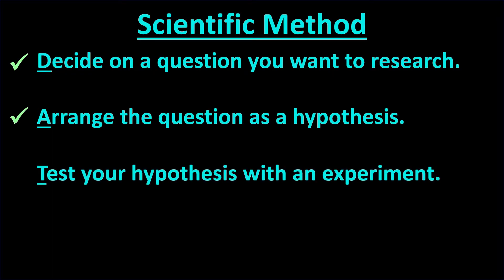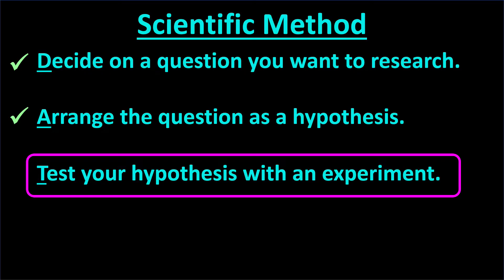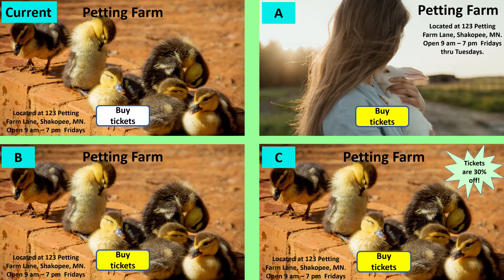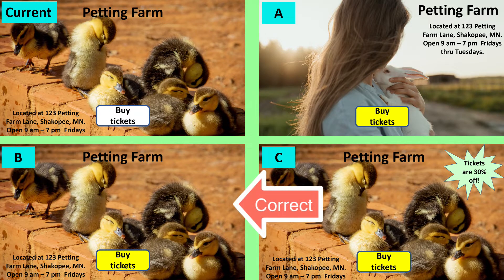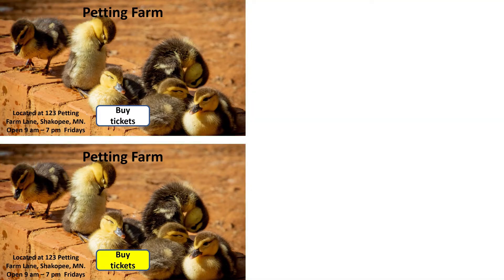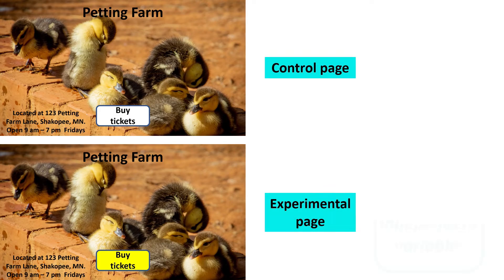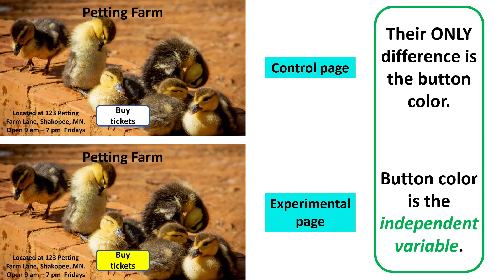Now we are ready to do the third step of the scientific method, which is to test the hypothesis with an experiment. Our partners made some other homepages for the experiment. We picked option B because it is exactly the same as the current home page except for the button color. We will call the current home page the control page, and the page we are testing the experimental page. The one difference between these two pages is the button color, which is the independent variable. The value of the independent variable is white for the control page and yellow for the experimental page.